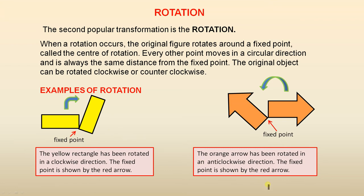The orange arrow has been rotated in an anti-clockwise direction. The fixed point is shown by the red arrow. Every other point from this original figure rotates around that fixed point, which is the center of rotation.